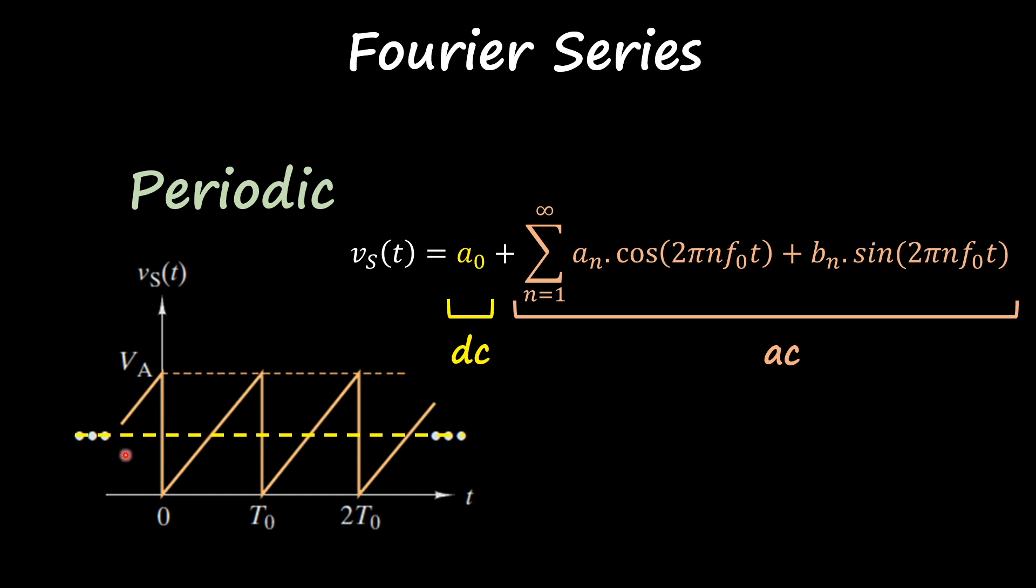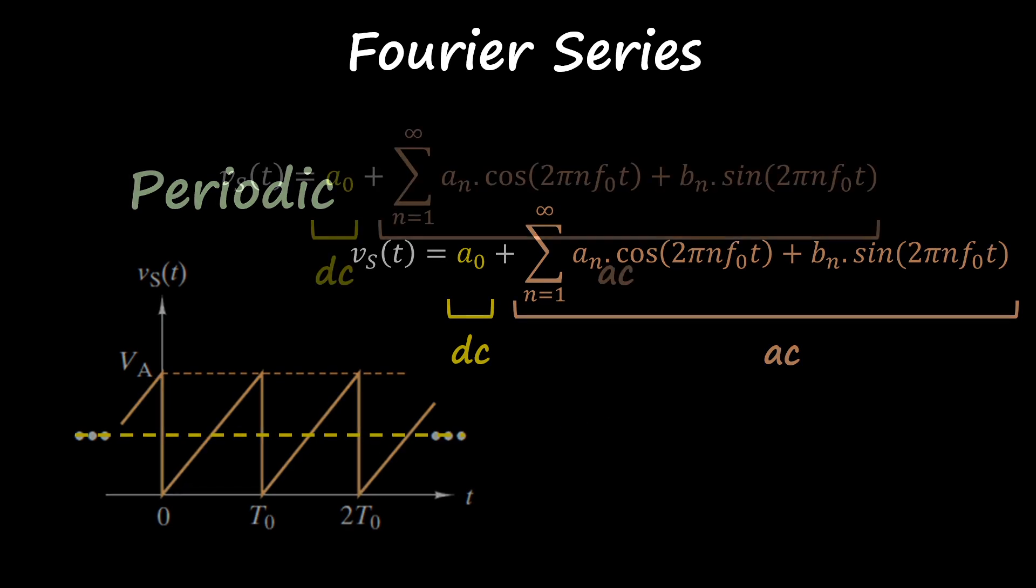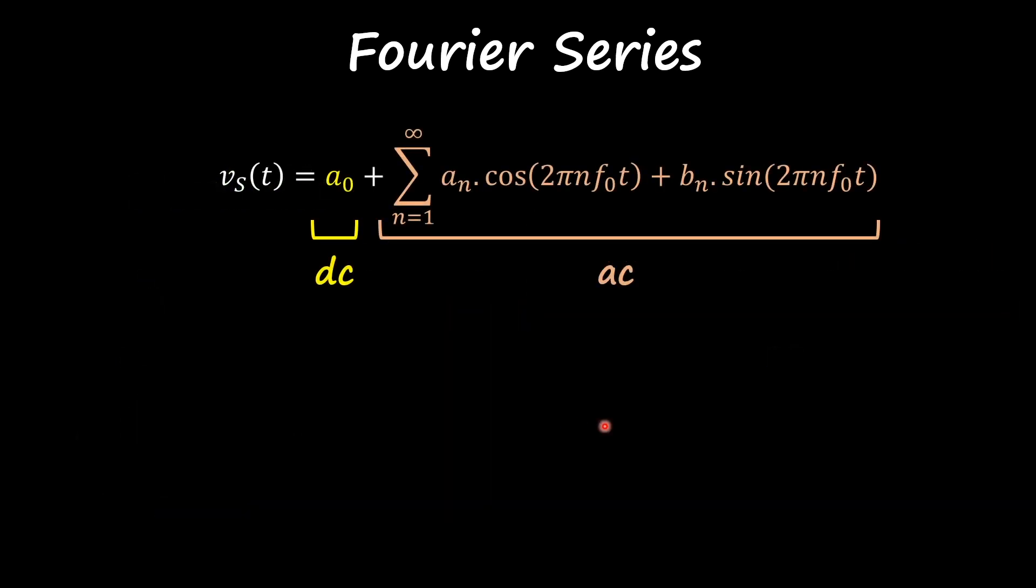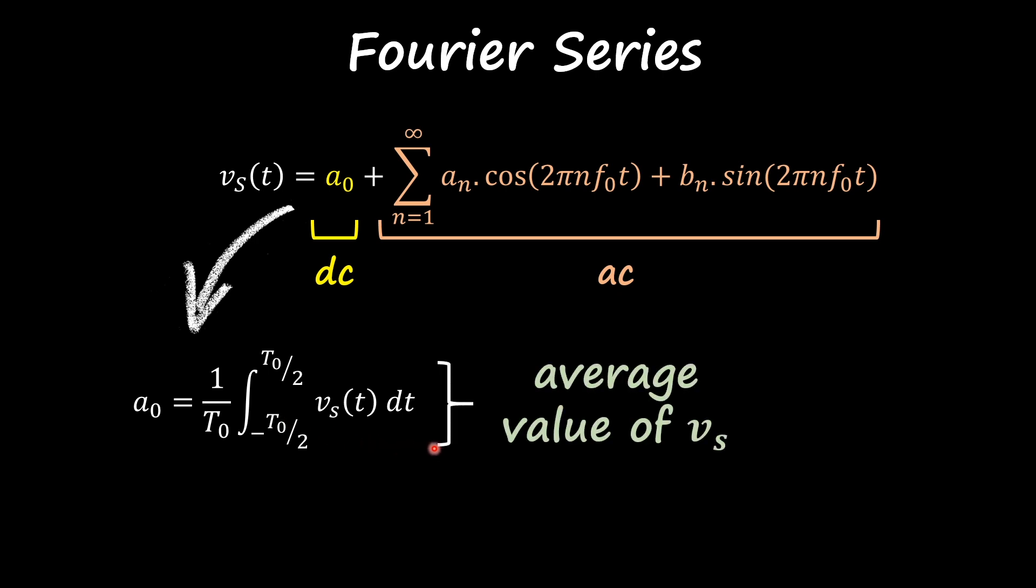If we approach this more in a mathematical way, a_0, which is the offset or the DC component, is going to be the integral of your signal over this period. We call this the average value of your signal.